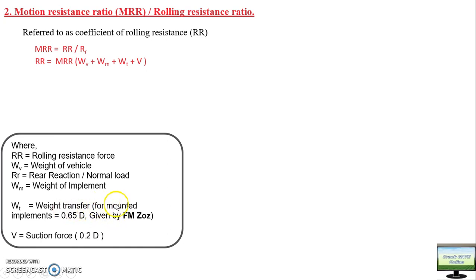Weight transfer for a mounted implement will be 65% of draft force D. A mounted implement is one attached using all three points of the three-point linkage of the tractor, so it is fully supported by your hydraulic system.